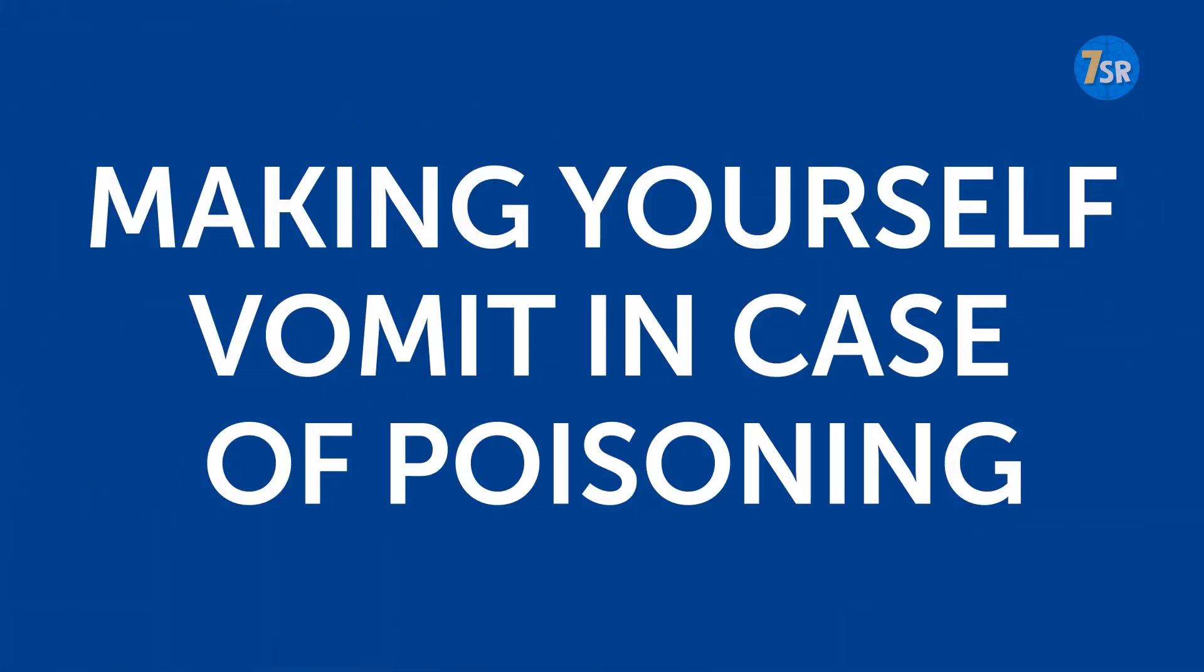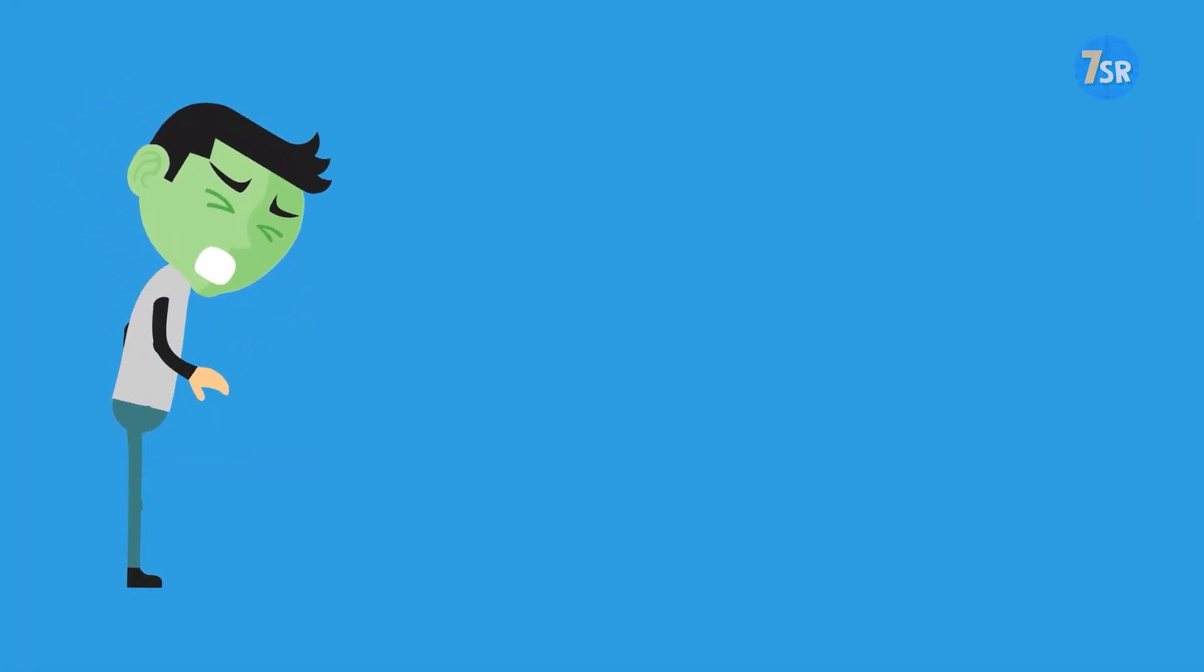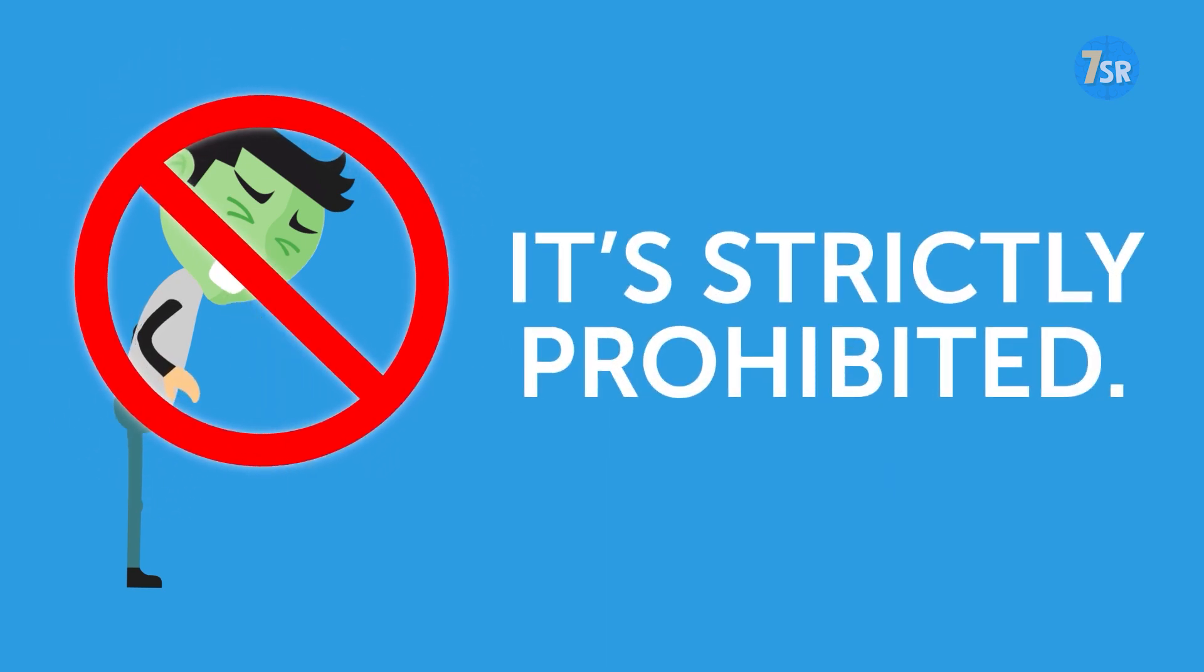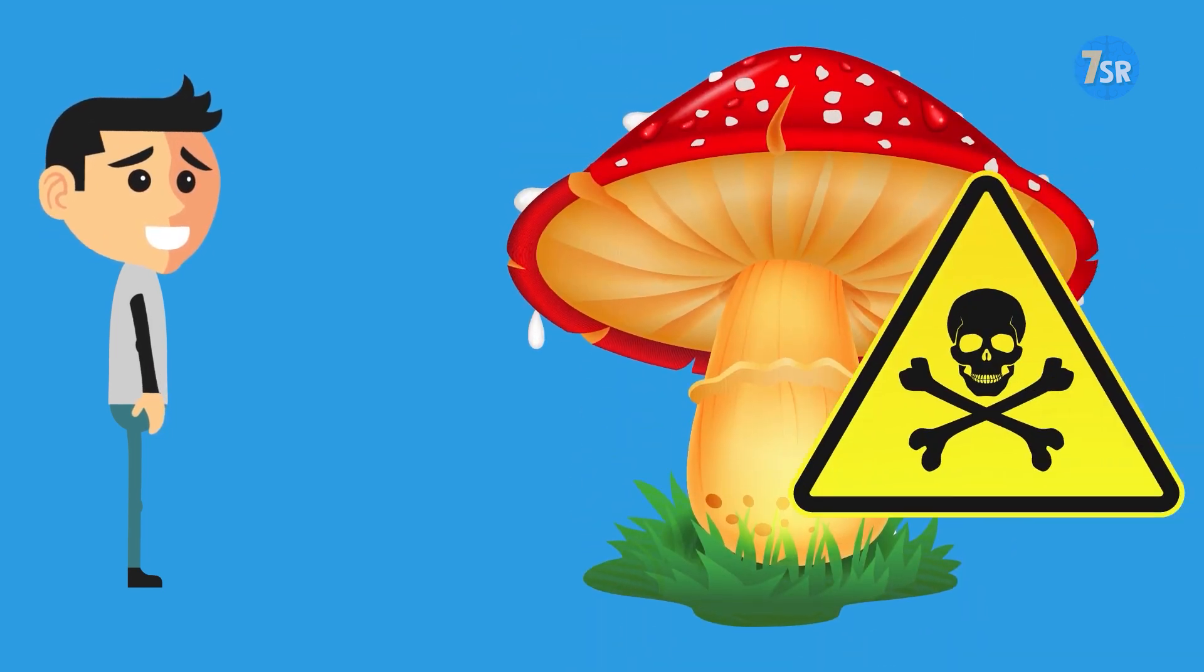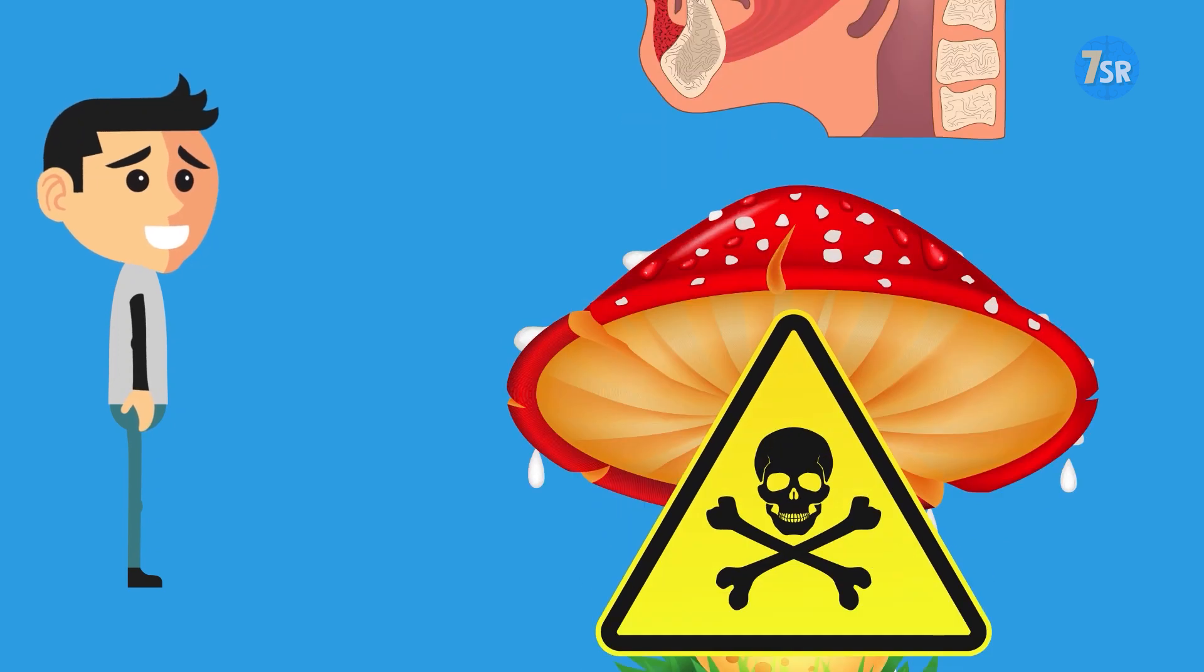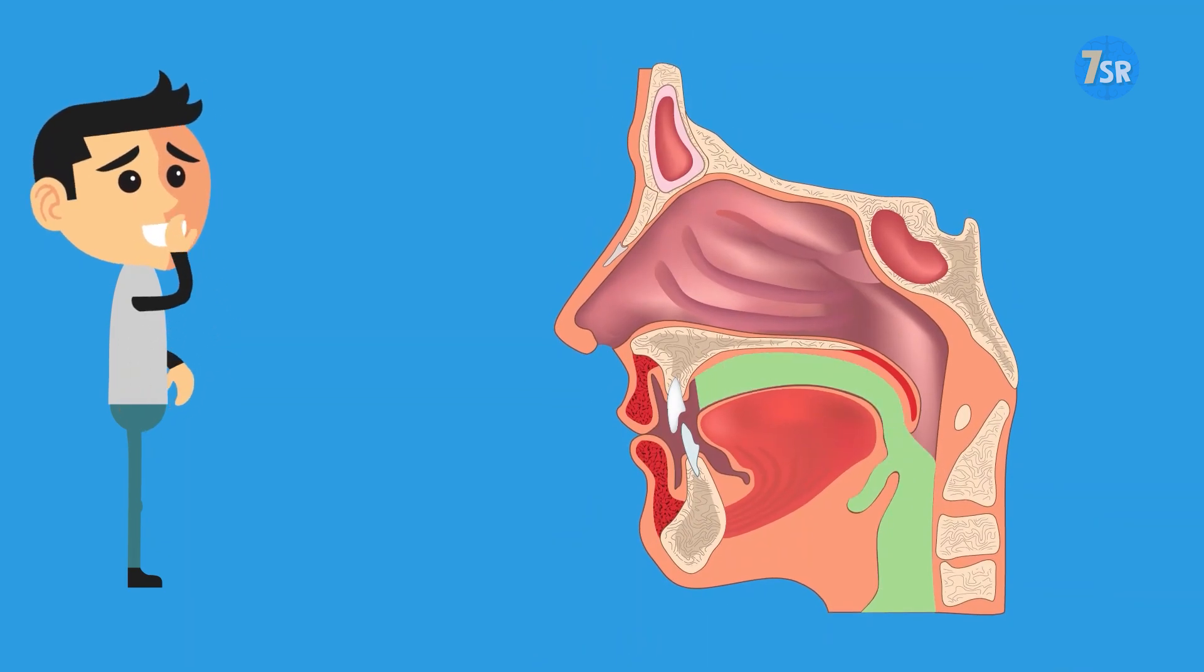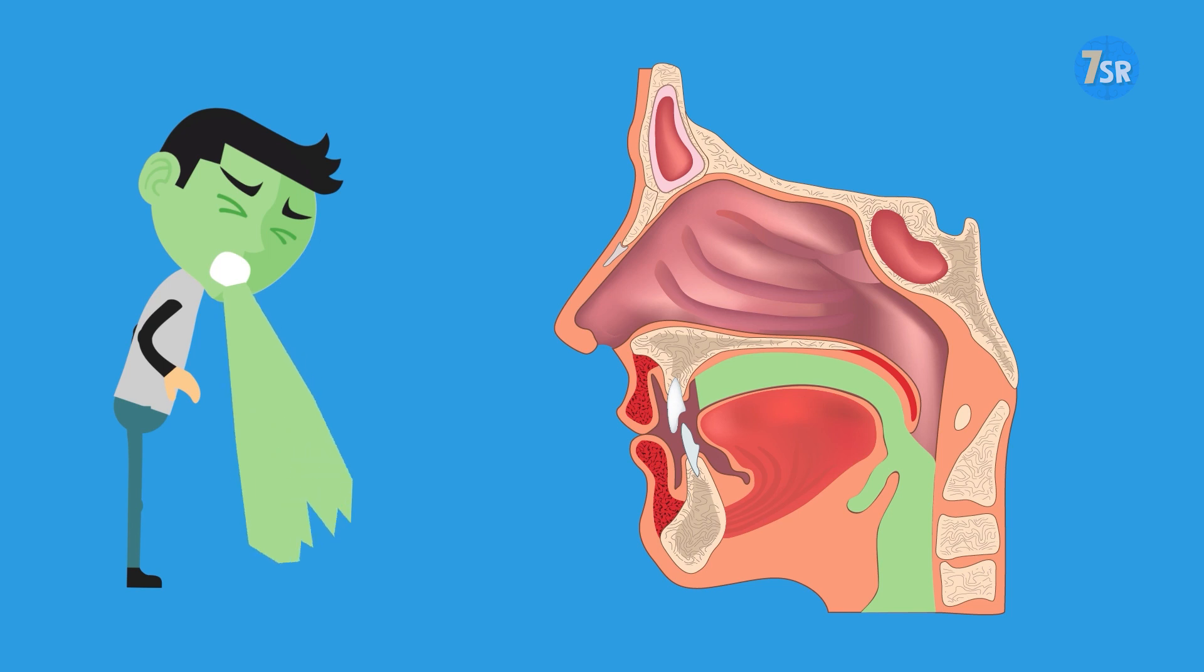Making yourself vomit in case of poisoning. The standard recommendation for poisoning is to make yourself vomit. It might sound reasonable, but actually it's strictly prohibited. First of all, the poison can get into the lungs and damage them. The second problem is that if someone was poisoned with some chemicals, vomiting doubles the chance of burning your throat. Finally, it might be very difficult to stop vomiting once it starts.